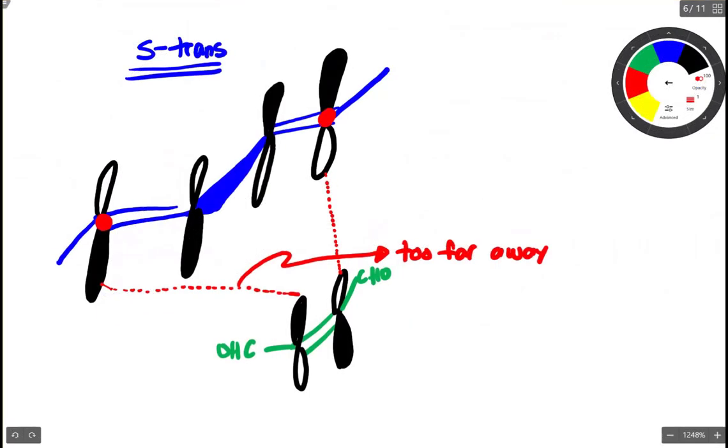It really comes down to orbital overlap. In the S-trans conformation, the orbitals that we need to overlap with are here. We can come over and get good alignment here, but this is just too far away.